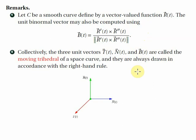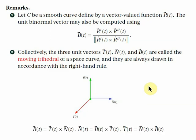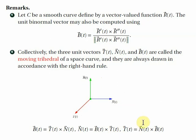The three vectors T, N, and B are always drawn in accordance with the right-hand rule. So T × N = B: if we curl the fingers of the right hand from T to N, the thumb points upward — the direction of B. Also, B × T = N: curling from B to T, the thumb points to the right — the direction of N. Finally, N × B = T: curling from N to B, the thumb points outward out of the screen — the direction of T.